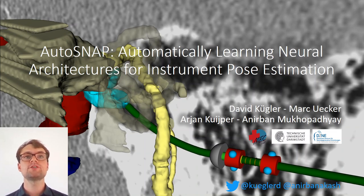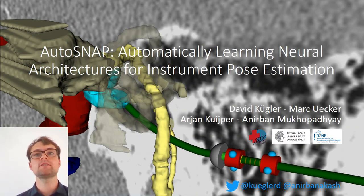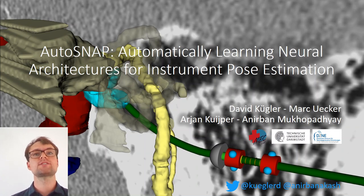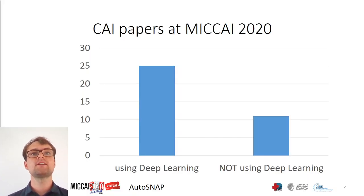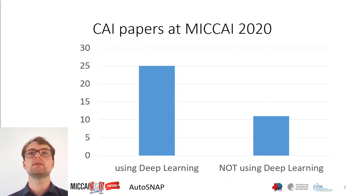Hello everybody. Researchers using deep learning often spend a lot of time designing custom neural architectures by hand. Today, I will present our work on letting the computer do that for you. It is AutoSnap. But first, why is this relevant for researchers in computer-assisted interventions, CHI? Let's start with taking a look at papers accepted at MIGCHI. Of CHI-label papers, almost two-thirds use deep learning.